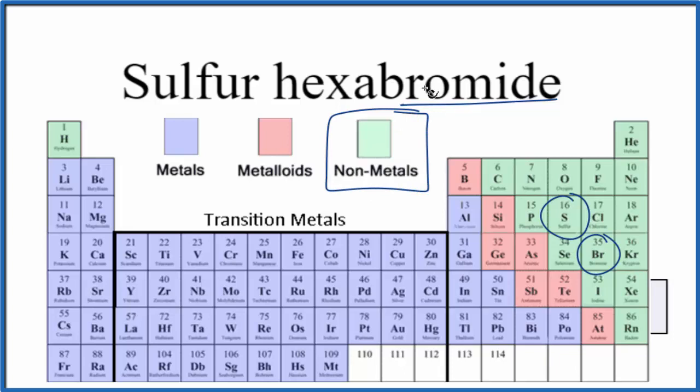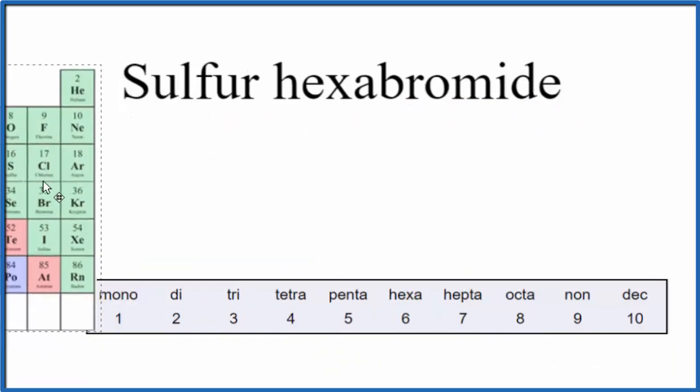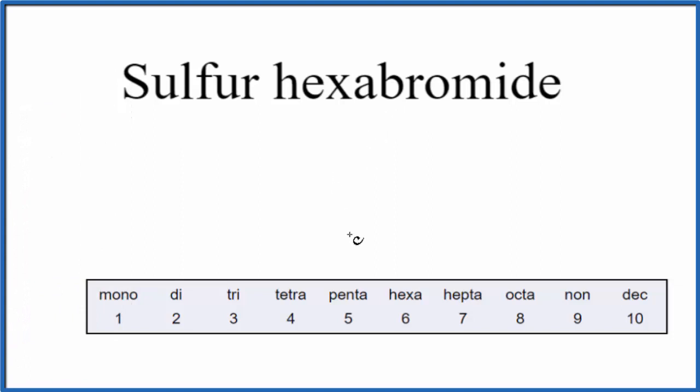We have two non-metals, that makes this a molecular compound, also called a covalent compound. So since it's a molecular compound, that means we don't need to worry about the charge when we write the formula for sulfur hexabromide.